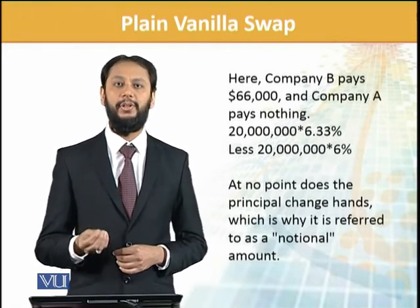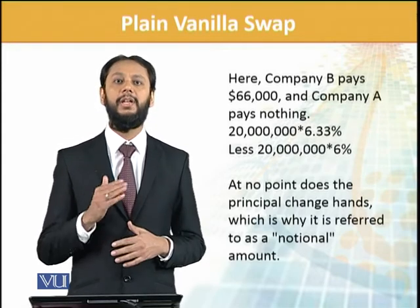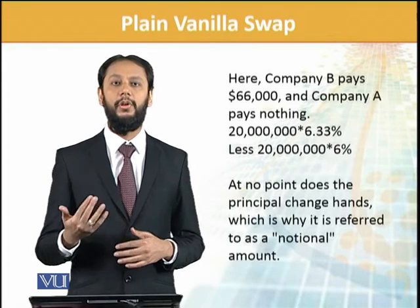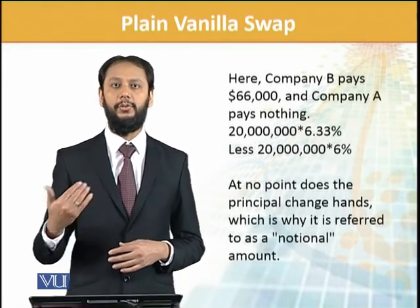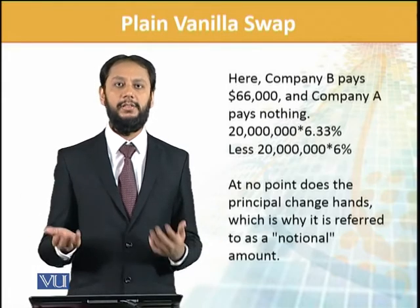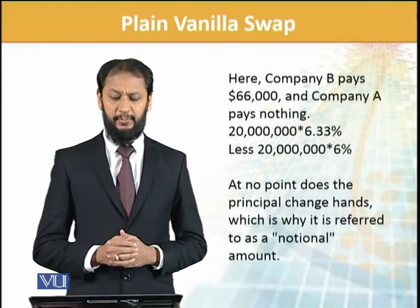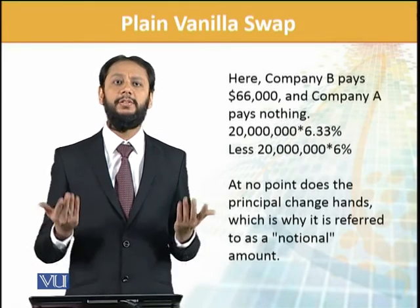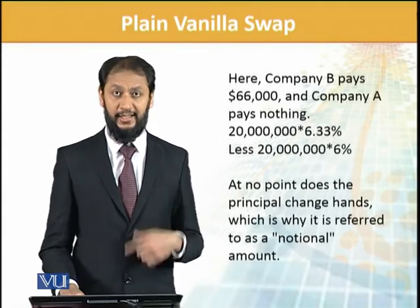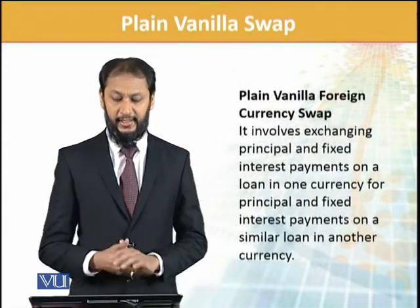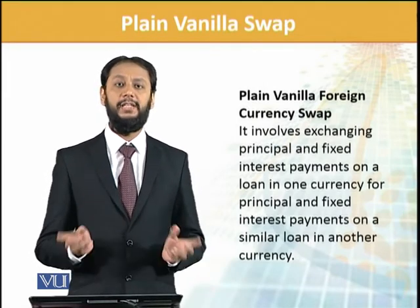Effectively, Company B's cost becomes 6.33%. This way they can change the structure from what they originally had to what they wished. When LIBOR is high, one party pays more; when LIBOR is low, the other benefits. At no point does the principal change, because both are in the same currency — so principal exchange is not involved here.